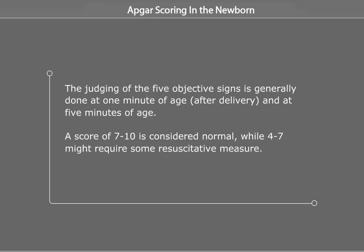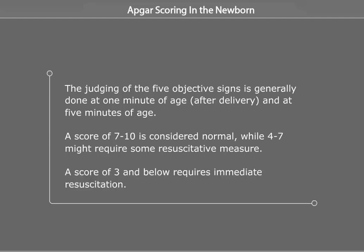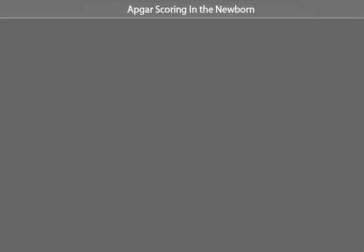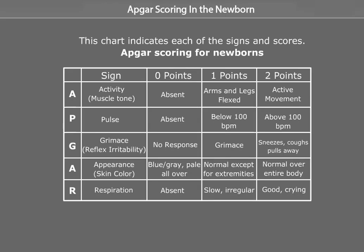A score of 7 to 10 is considered normal, while 4 to 7 might require some resuscitative measures. A score of 3 and below requires immediate resuscitation. This chart indicates each of the signs and scores — Apgar Scoring for Newborns.